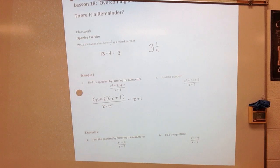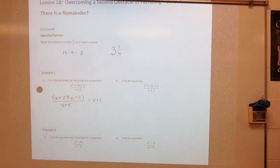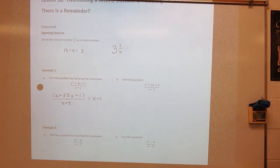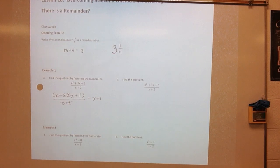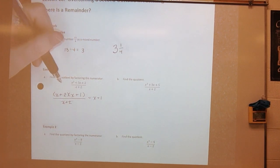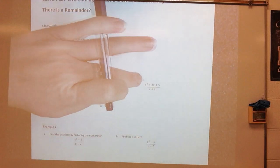Let's look at the second one: find the quotient of x squared plus 3x plus 5 divided by x plus 2. Can I factor it? It's plus plus, which means I have to add factors of 5 to get 3. There is no way — 5 and 1 would not add together to get 3. So I have to look at something a little different.